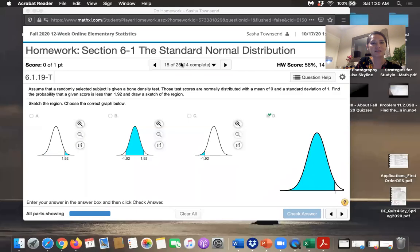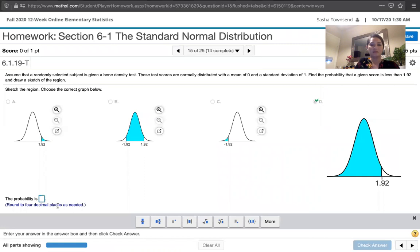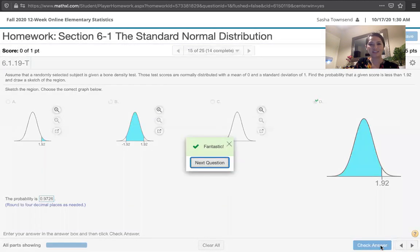Let's go back to our homework assignment now. The probability is 0.9726, rounded to four decimal places as we have in our table. So we're good to go. That's it. Thank you.